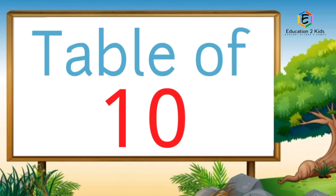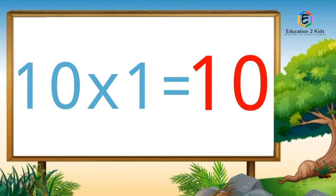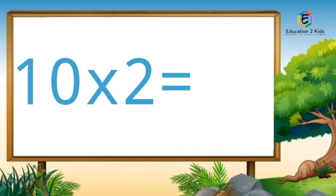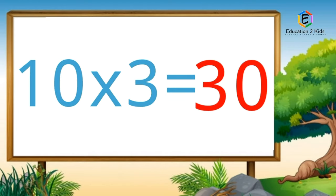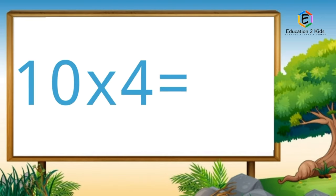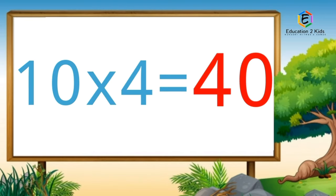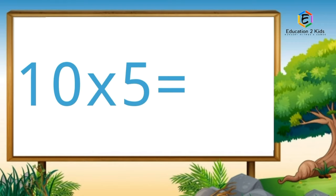Table of ten. Ten ones are ten. Ten twos are twenty. Ten threes are thirty. Ten fours are forty. Ten fives are fifty.